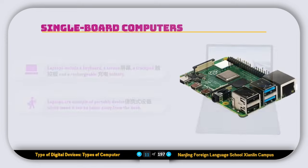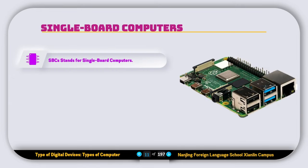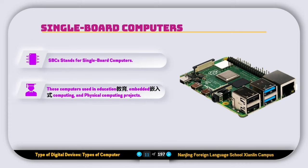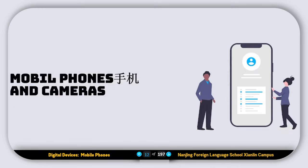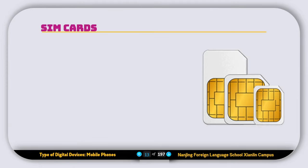The next device is called the SBC, or Single Board Computer. SBC stands for Single Board Computer. These computers are used in education, embedded computing, or physical computing projects. Examples include Raspberry Pi, BeagleBoard, PandaBoard, MK802, etc.